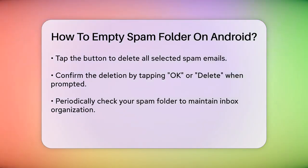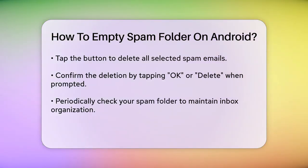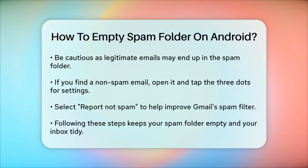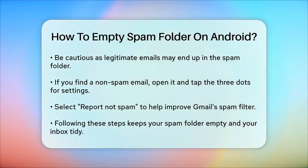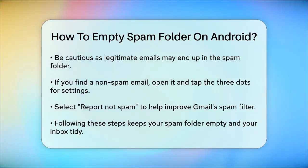In the spam folder, you'll see a list of all the emails that have been flagged as spam. You can review each email if you need to, but if you're sure you want to delete them all, you can select all the emails. To do this, tap on the checkbox at the top of the screen to select all the emails in the spam folder. Once you've selected all the emails, you'll see a Delete All or Empty Spam Now button at the bottom of the screen. Tap on this button to delete all the spam emails.